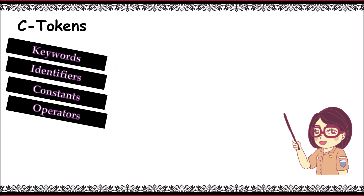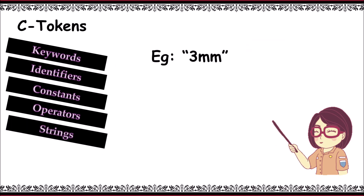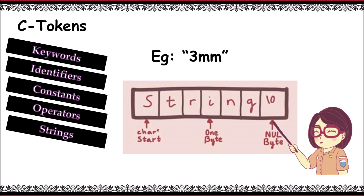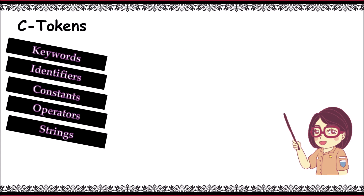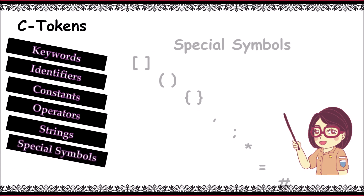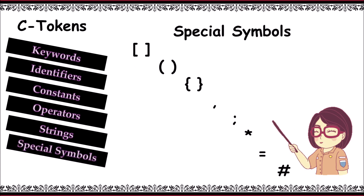Next is strings. In this example you can see a string which is surrounded with double quotes, and a string ends with a special character called backslash zero, the null character. An array of characters ended with the null character backslash zero and enclosed with double quotes — we call it a string.